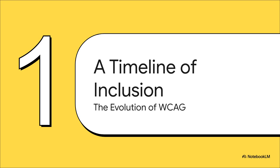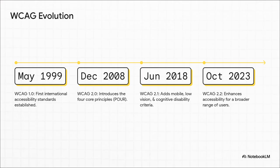This standard didn't just appear out of nowhere. It's a living, breathing document that's had to grow and evolve right alongside technology. Way back in 1999, version 1.0 laid the groundwork. Then a huge leap forward came in 2008 with version 2.0 — the one that gave us the core principles we're about to talk about. A full decade later, version 2.1 had to adapt to our mobile-first world, adding rules for small screens and touch controls. And then just recently, in October 2023, version 2.2 came out to make things even more inclusive. What this timeline shows us is that accessibility isn't a one-and-done checkbox — it's an ongoing conversation that has to keep up with our constantly changing world.